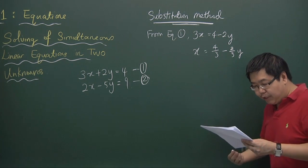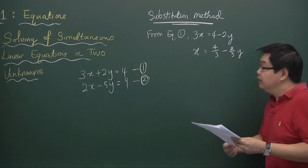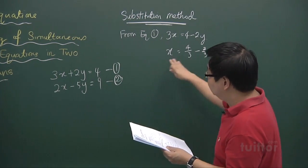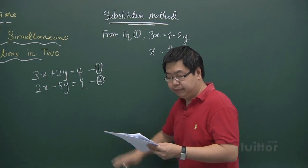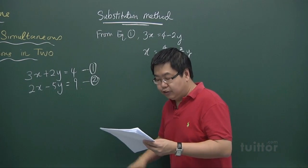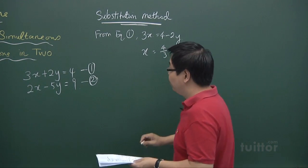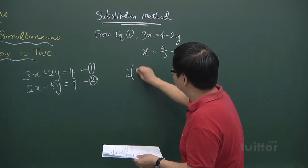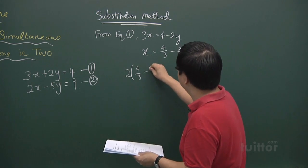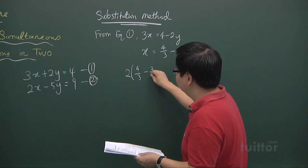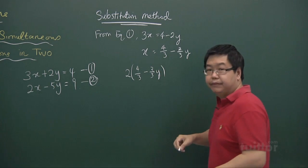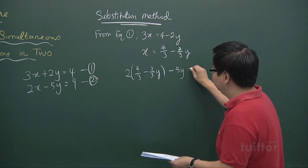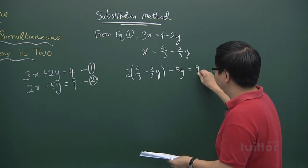Then after which, you substitute this x value into the second equation. So if we substitute into the second equation, we get 2 into (4 over 3 minus 2 thirds y), minus 5y equals 9.